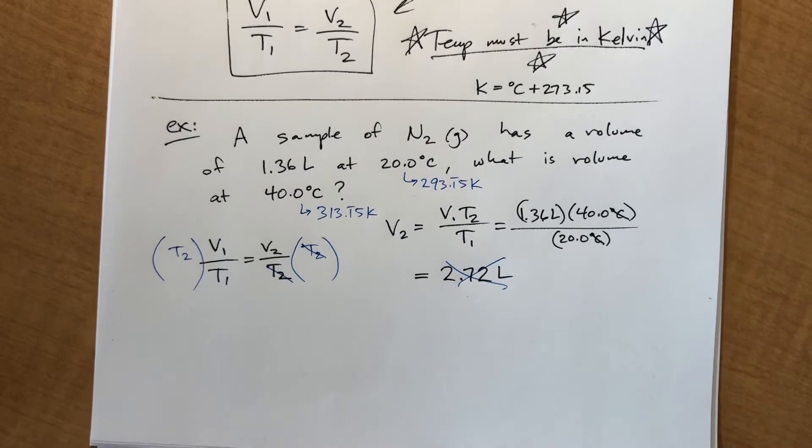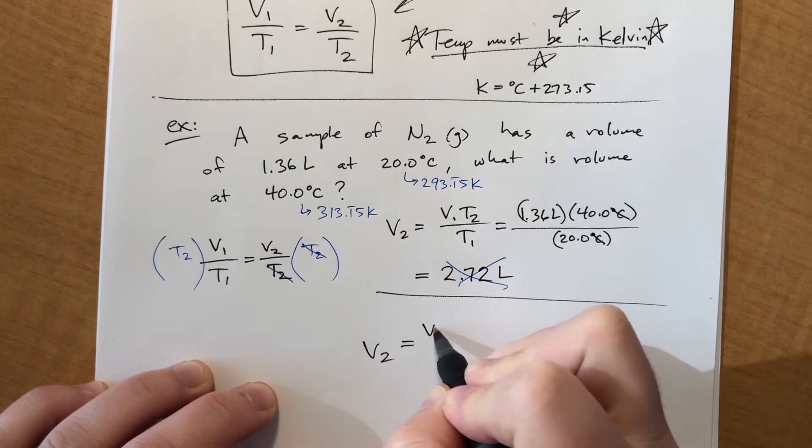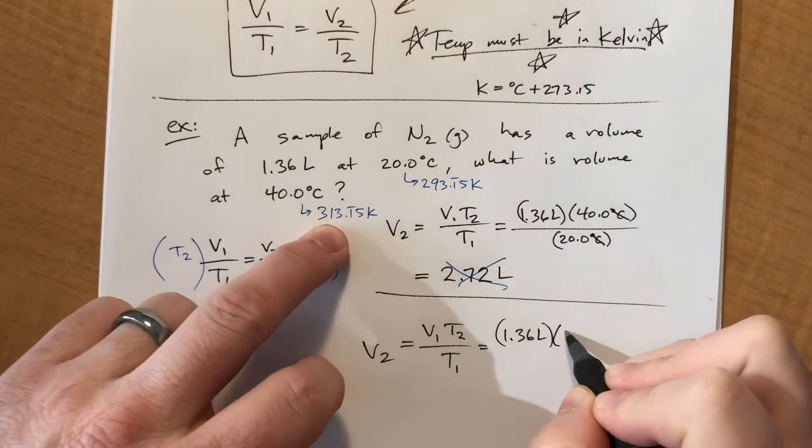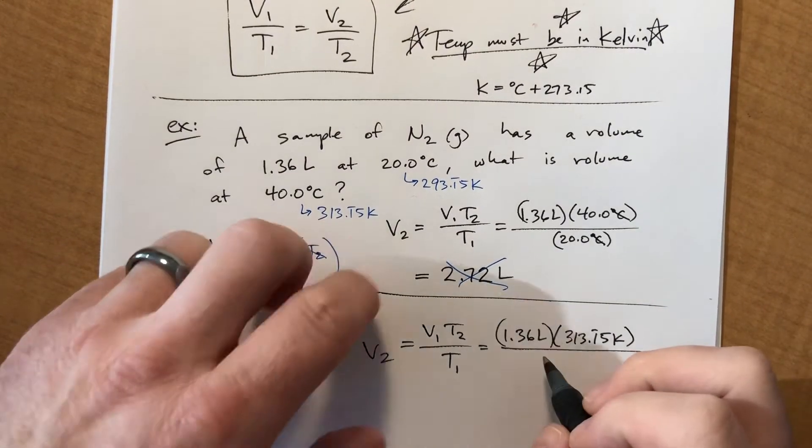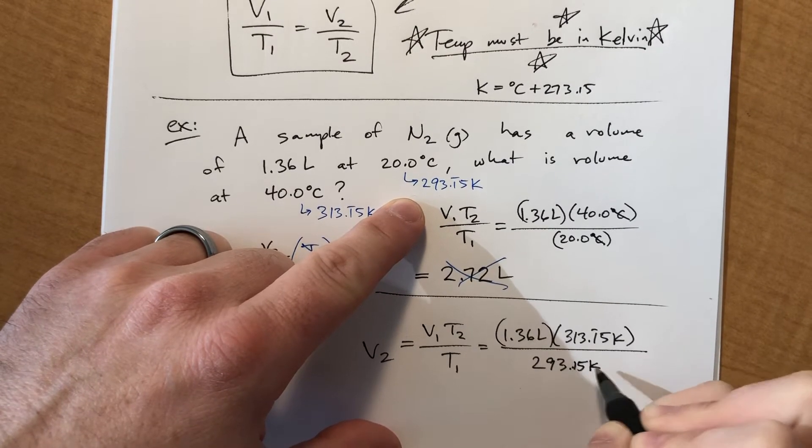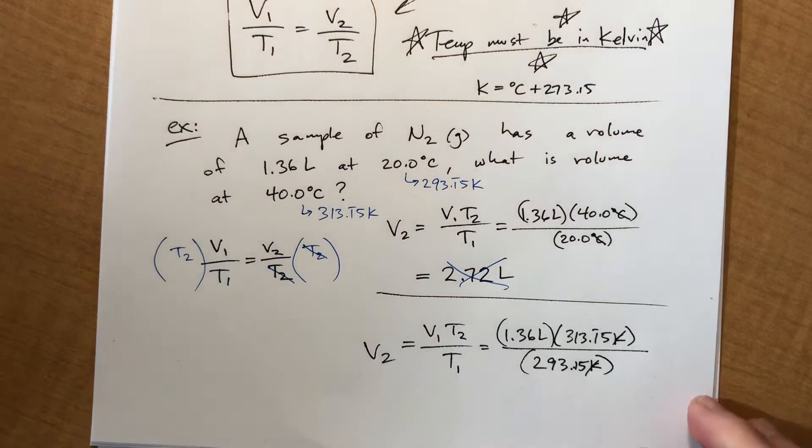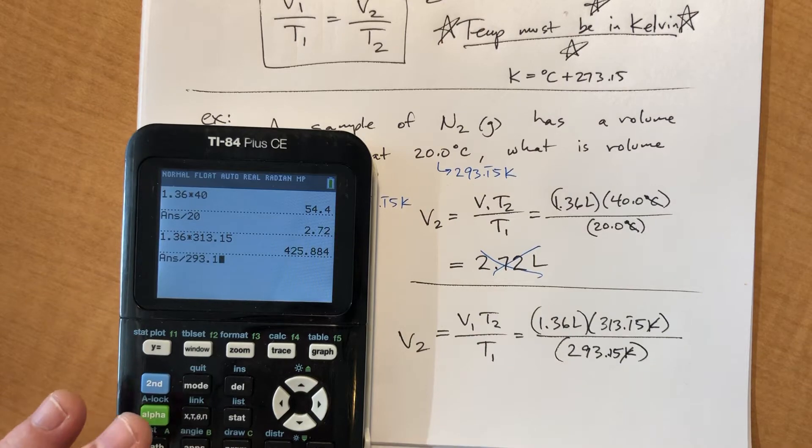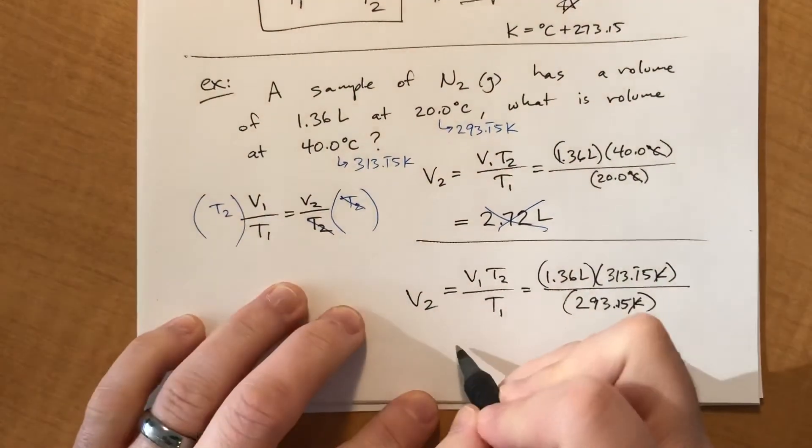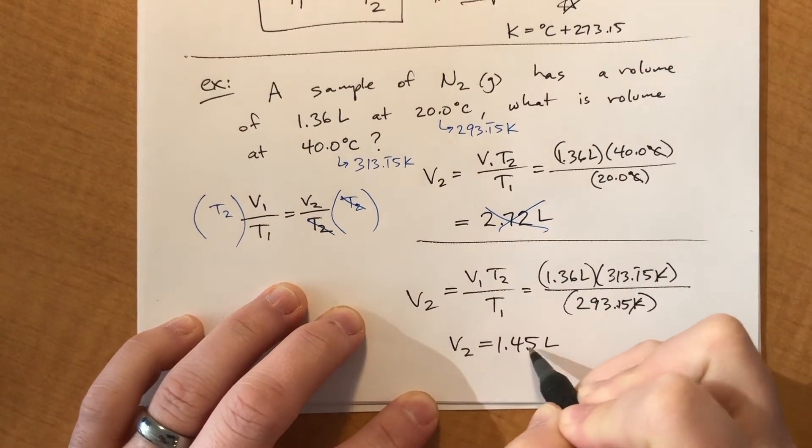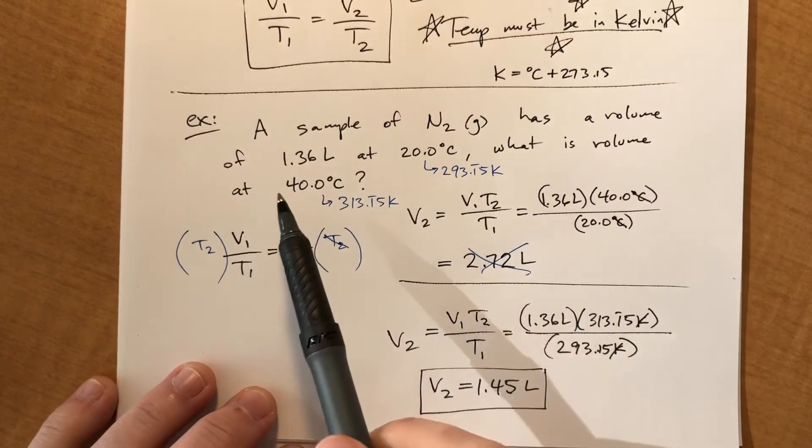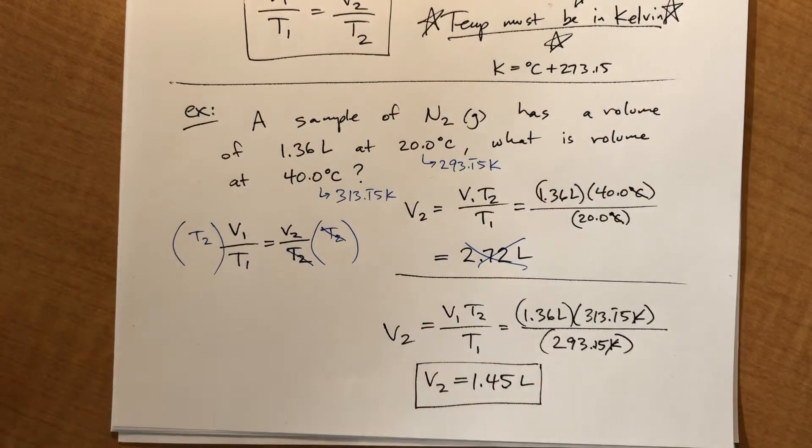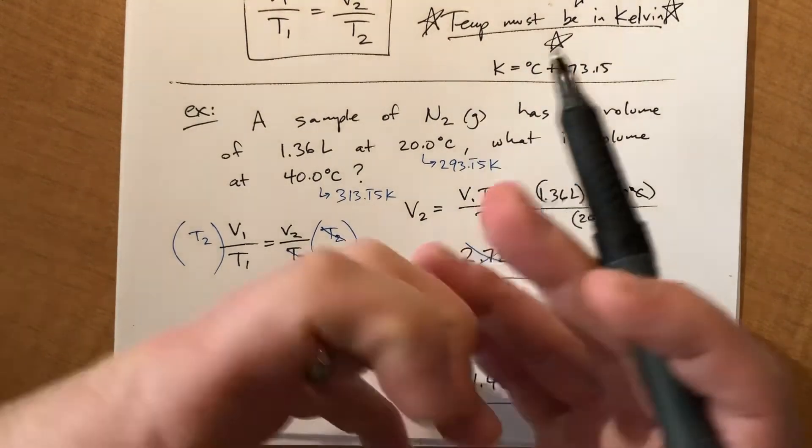So now we can substitute those numbers in and we'll probably get a much better answer. So the equation was rearranged correctly, but we plugged in the Celsius temperatures, not the Kelvin temperatures. So 1.36 times 313.15 divided by 293.15. Kelvin's will still cancel out. And what you'll find is that the answer doesn't really change a whole lot. 1.36 times 313.15 divided by 293.15. And I got 1.45.